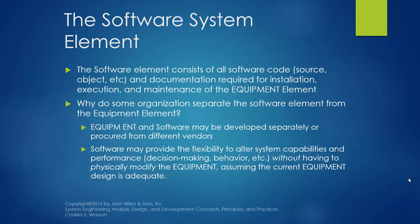If you buy equipment and you need to make it do something different or alter the capabilities, you can just install different software or update the current version, and you will see that it has different capabilities than before. So you don't have to change the whole equipment or hardware — you can do it by upgrading or updating the system software. That's why they separate the software from the hardware or the equipment.